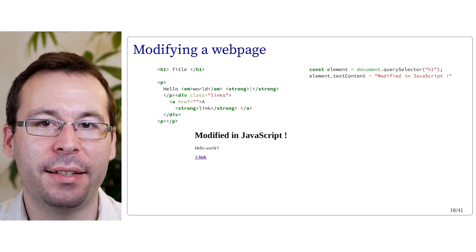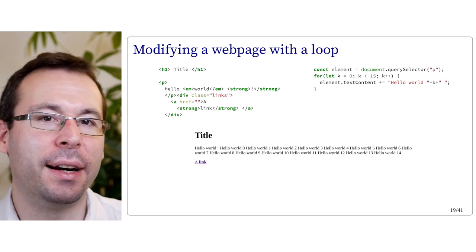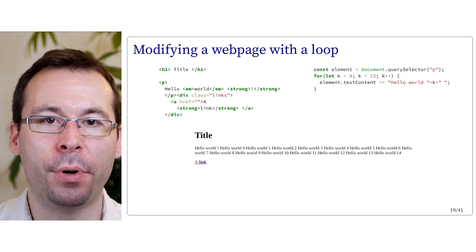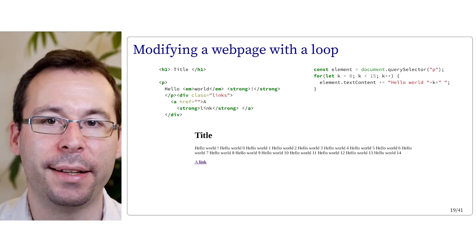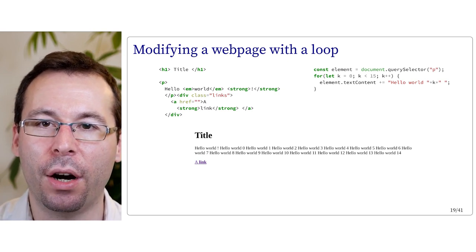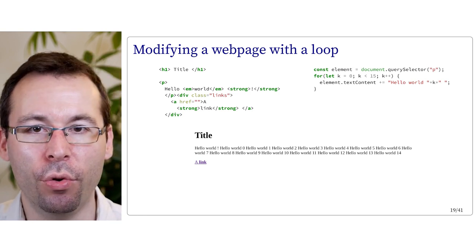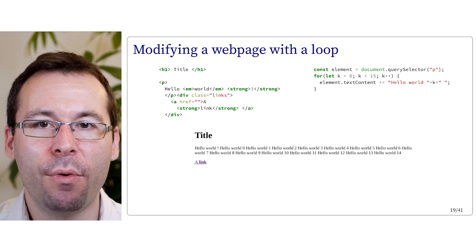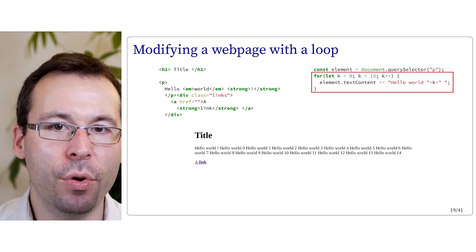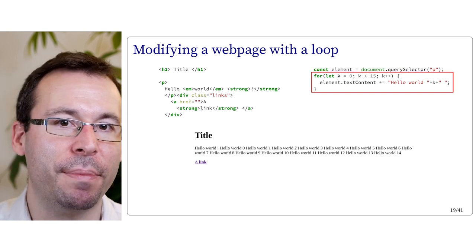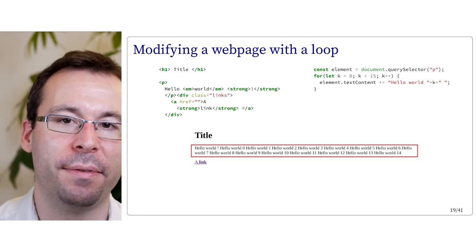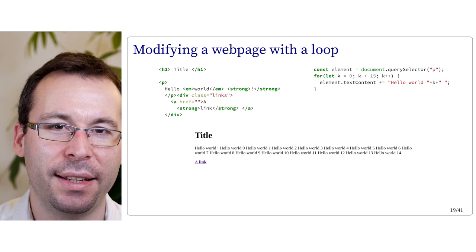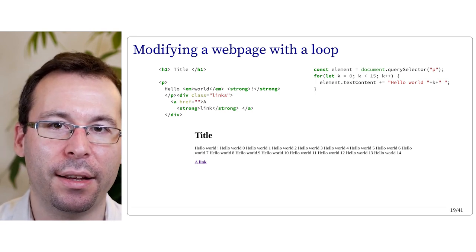Modifying a title like that is not very interesting in itself. Something more interesting is to generate automatically a lot of quasi-similar content. Sometimes you want to create lots of paragraphs with procedural information that could be generated from an automatic loop. In basic HTML, you would need to write it all manually. But with JavaScript, you can use a loop that will fill this content for you. For instance, we query the paragraph element p, then add in a loop 15 times 'hello world' with an incremented number: hello world 0, hello world 1, 2, 3... One thing with textContent is that we can only modify plain text inside an element, so everything appears on the same line, which can be a limitation.